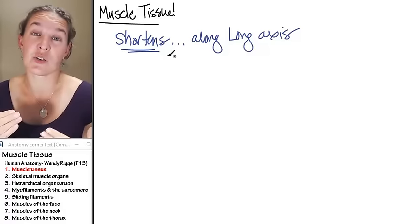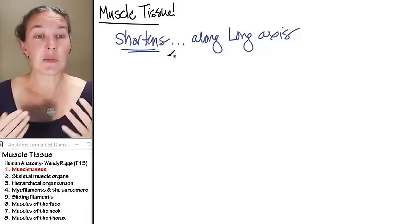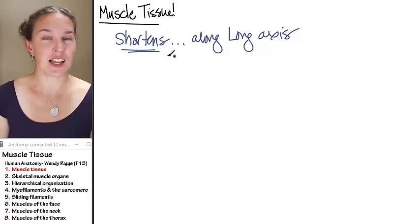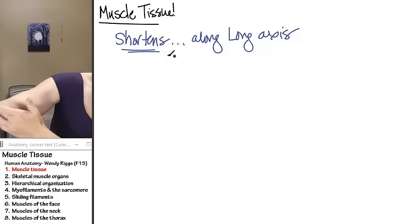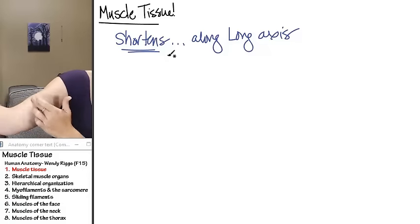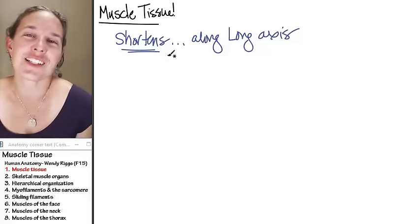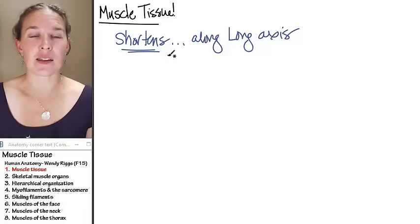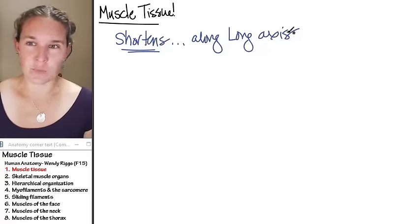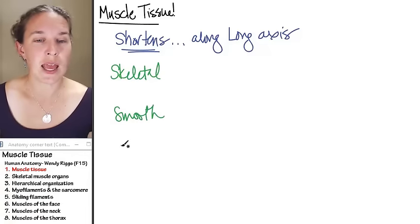We should put muscle tissue inside structures that we want to change shape. Skeletal muscle tissue often will span a joint, and when it shortens, it actually causes movement — skeletal muscles power that. The three kinds of muscle tissue are skeletal muscle, smooth muscle, and cardiac muscle.